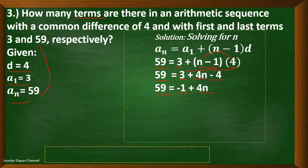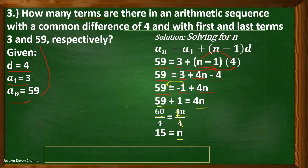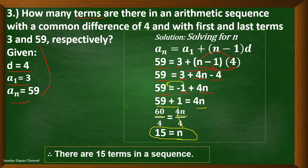Transpose negative 1 to the left side of the equation, and it becomes positive 1. So 59 plus 1 equals 4n, giving us 60 equals 4n. Dividing both sides by 4: 4n divided by 4 equals n, and 60 divided by 4 equals 15. So there are 15 terms in the given sequence.